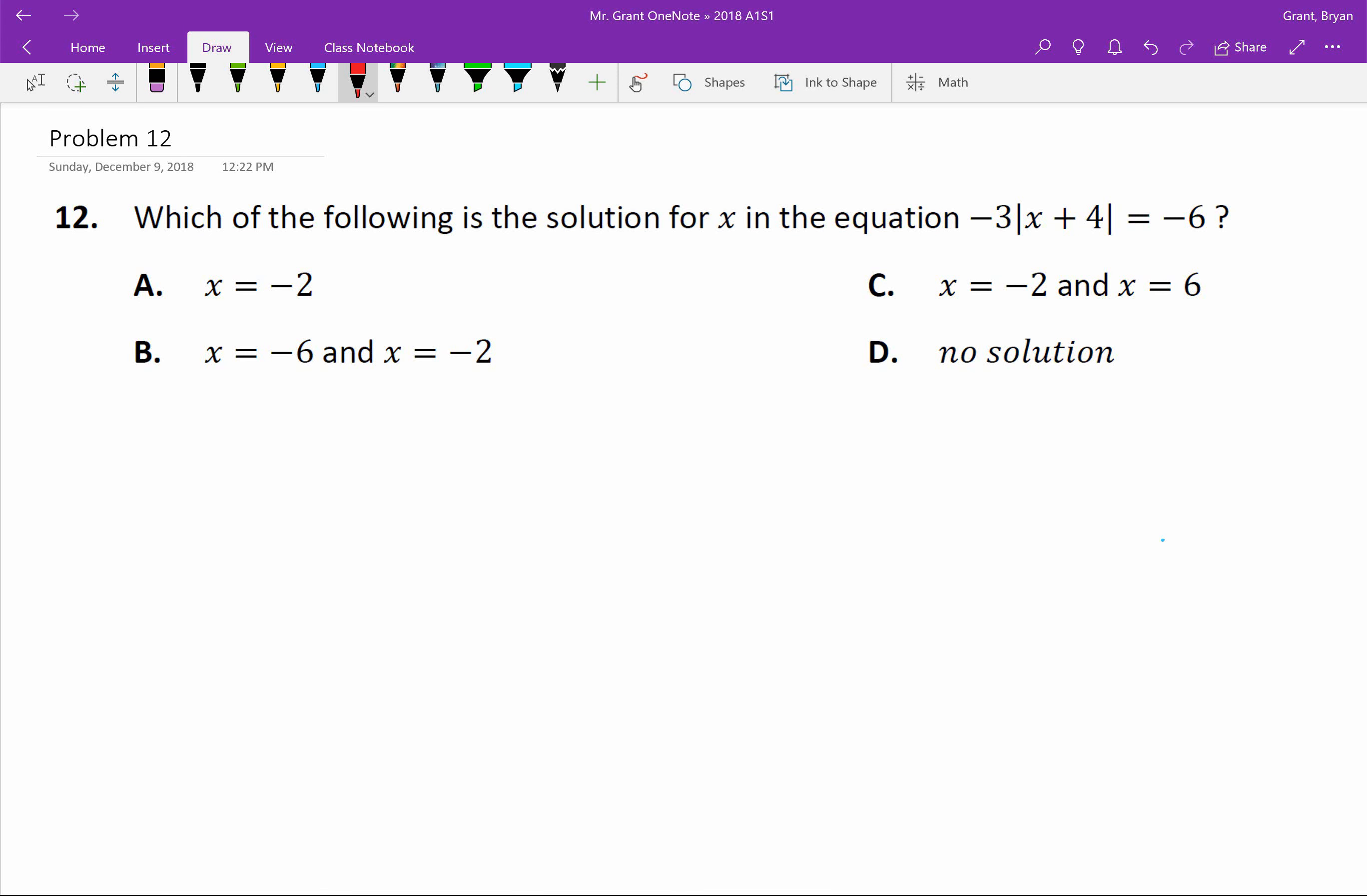Method one that we discussed last time was to isolate the absolute value. As I go through, we have negative three that's attached by multiplication to this absolute value quantity that's equal to negative six. So to isolate the absolute value we would divide both sides by negative three and end up with the absolute value of x plus four equal to positive two.